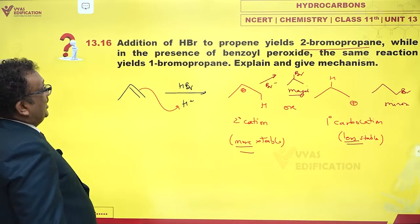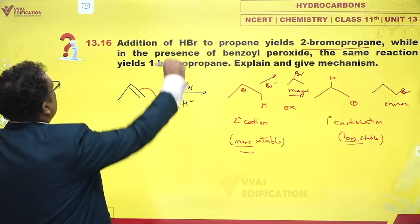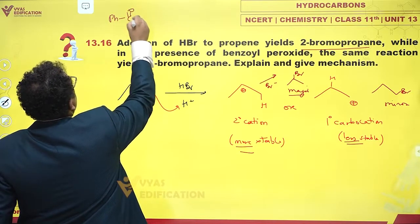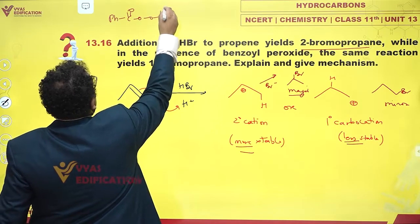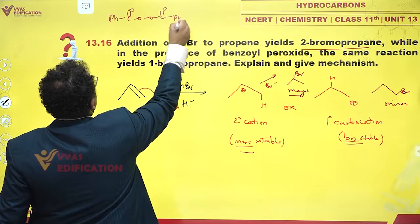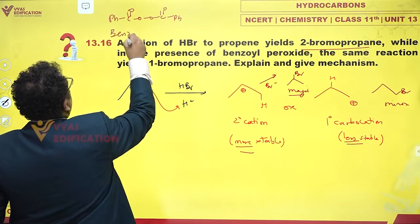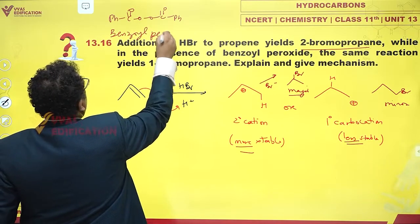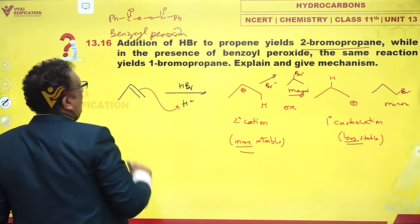When HBR is added to propene, due to electrophilic addition reaction, 2-bromopropane is the major product. This is the mechanism for electrophilic addition. But in the presence of benzoyl peroxide — now what is benzoyl peroxide? It is Ph-C(=O)-O-O-C(=O)-Ph. This is benzoyl peroxide.